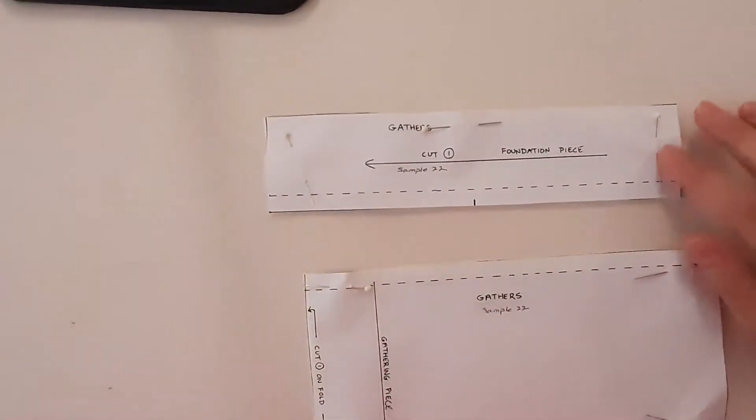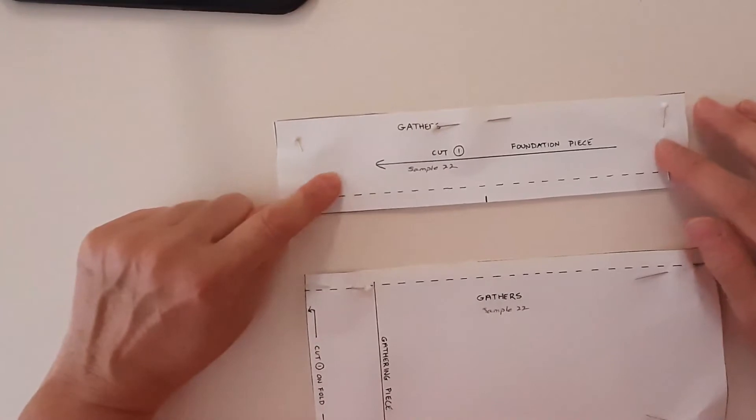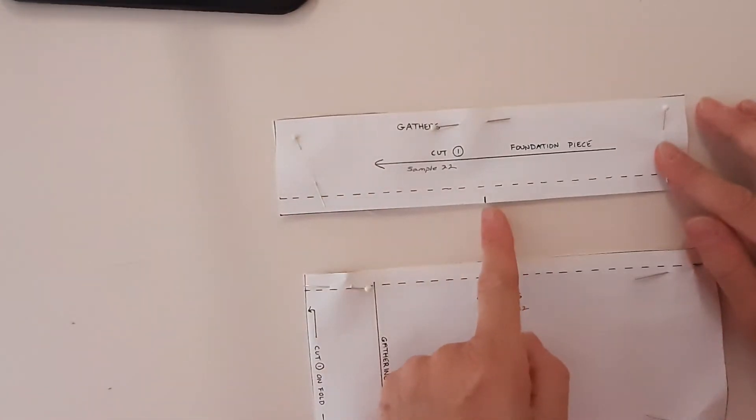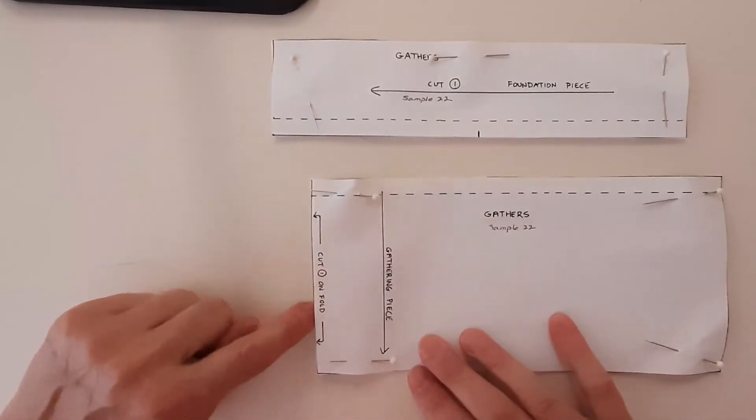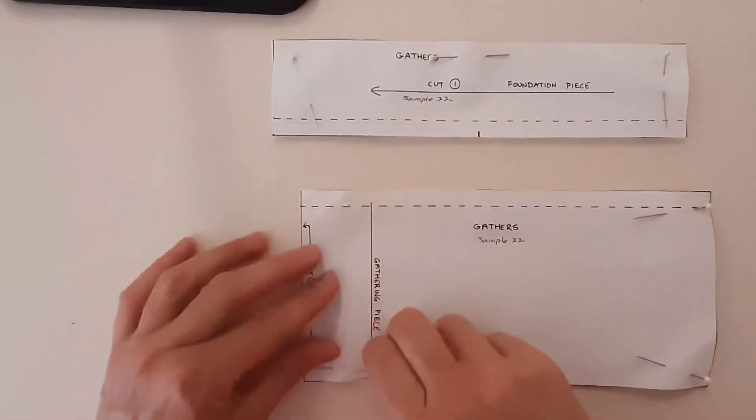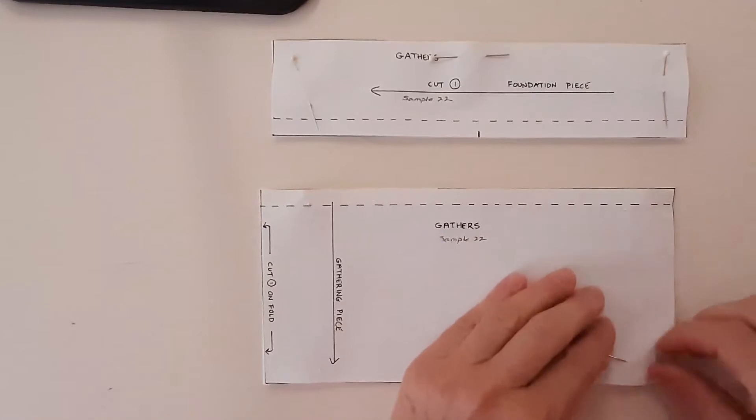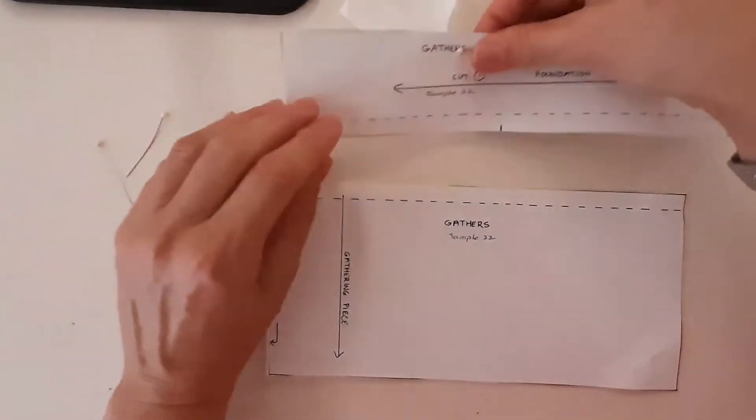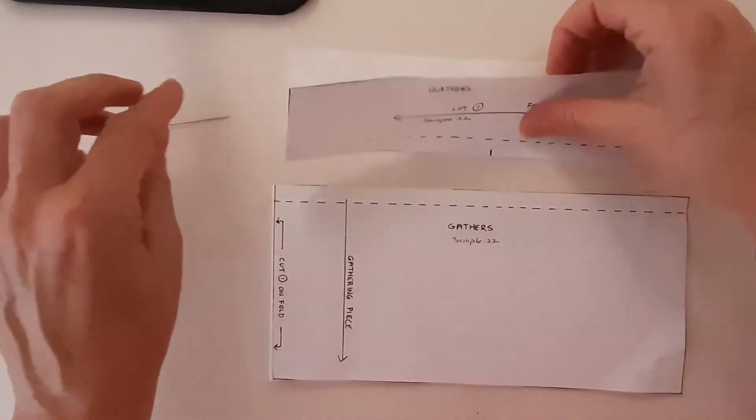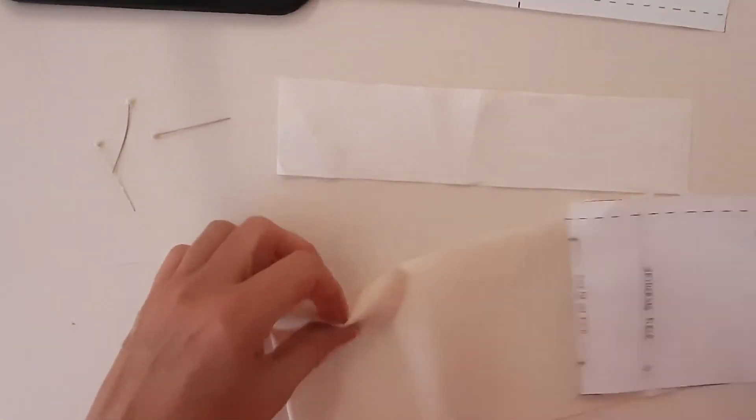You're going to cut your foundation piece, just one, and make sure to snip the notch. And then your gathered piece, which is cut one on the fold. When I take the pins out, I'm going to have this one shorter piece and I'm going to have the longer piece.